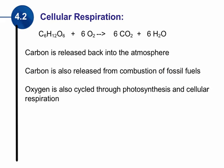Through photosynthesis and cellular respiration, oxygen is also cycled through. If we look at both chemical equations, oxygen is also a component. So sometimes this carbon cycle is also referred to as the oxygen cycle, because oxygen is a key component and is also recycled through photosynthesis and cellular respiration.